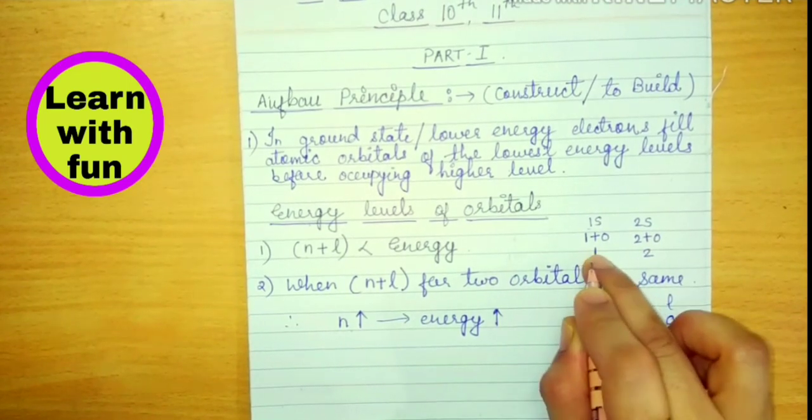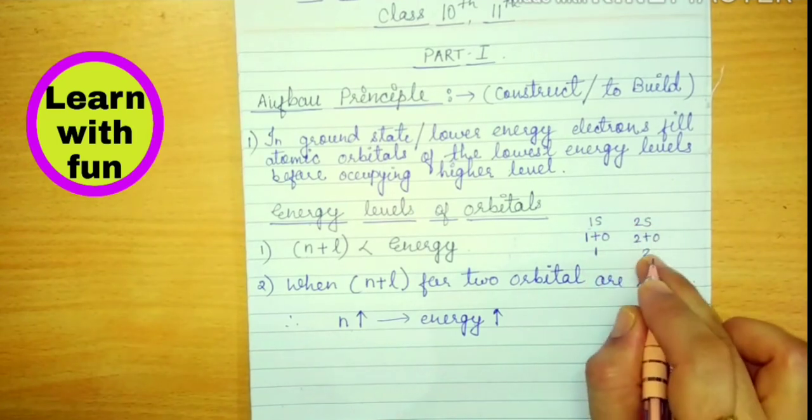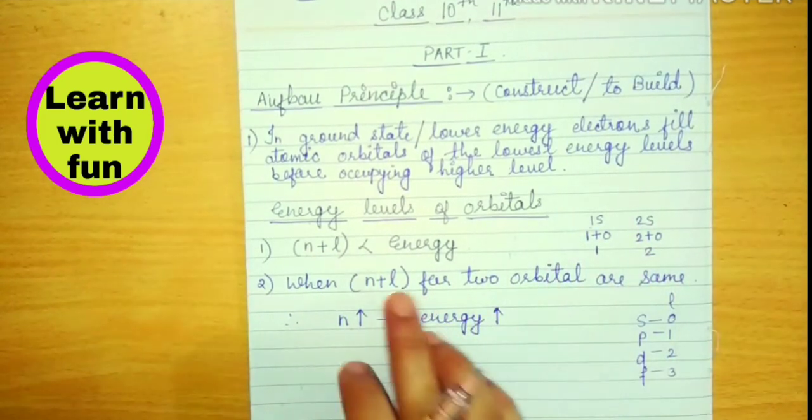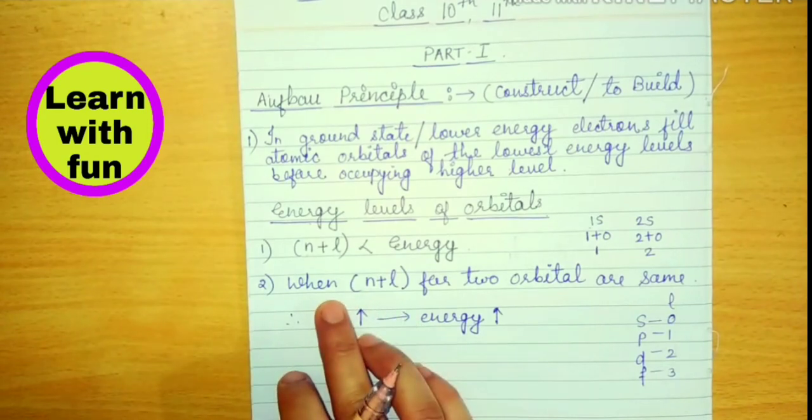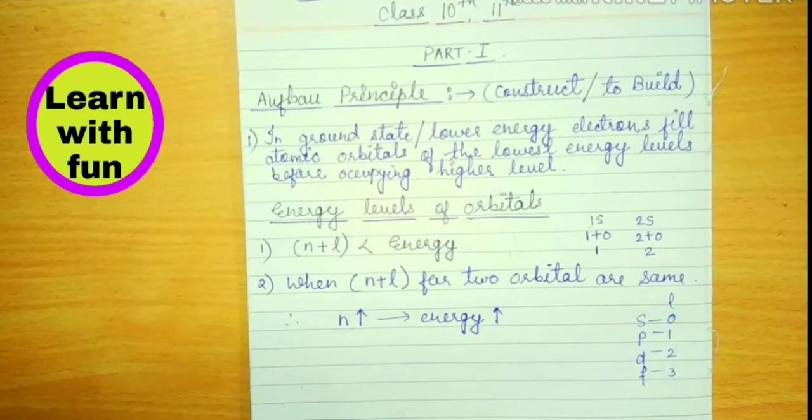So electrons will first go to lower energy orbital, then go to high energy orbital. This shows that. Sometimes it happens that both energies are the same. At that time how will we know which orbital has more energy?